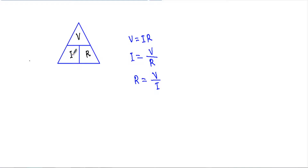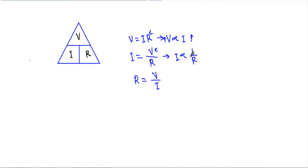Using the Ohmic triangle: to calculate voltage, multiply current by resistance; to calculate current, take the ratio of voltage to resistance; to calculate resistance, take the ratio of voltage to current. From these relationships I can deduce that V is directly proportional to I, meaning current increases proportionally with voltage. Also, with constant V, current I is inversely proportional to R — if resistance increases, current decreases. And in a linear circuit, the ratio of V to I is always constant.